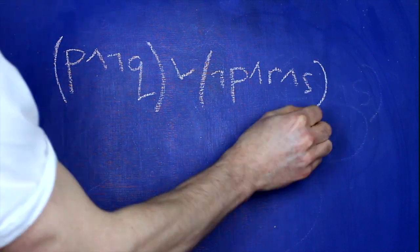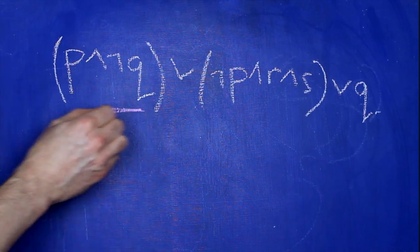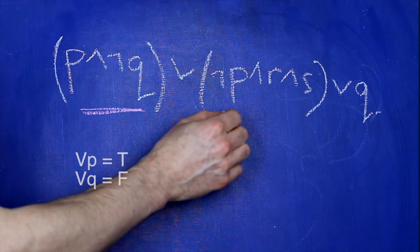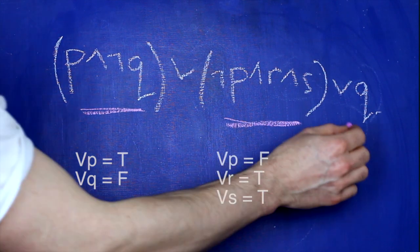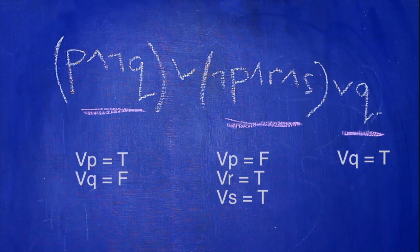Why are we interested in disjunctive normal forms? Well, here's one really useful feature. Each disjunct corresponds to a valuation that makes that sentence true. Have a look at this sentence here in disjunctive normal form. The first disjunct gives us this valuation, the second disjunct gives us this valuation, and the third disjunct gives us this valuation. So there we have a bunch of valuations. If we draw the truth table for this sentence, we'll see that every line that makes the whole sentence true corresponds to one of the valuations that we just read off.